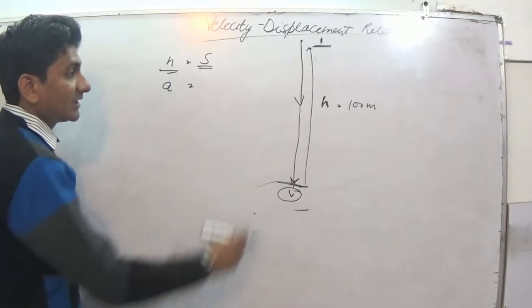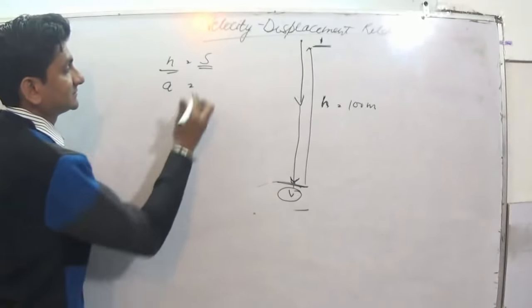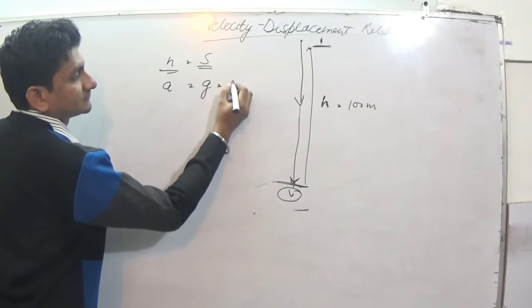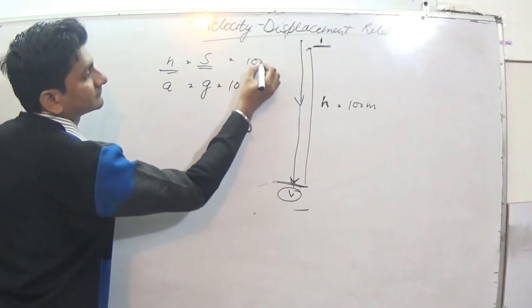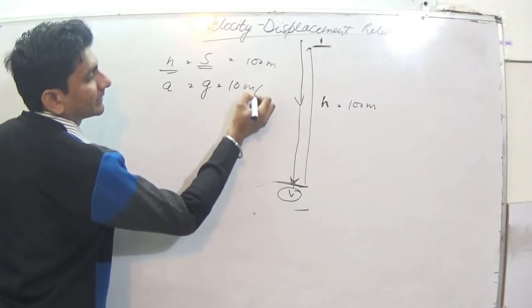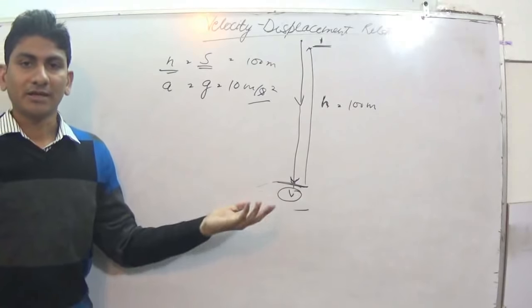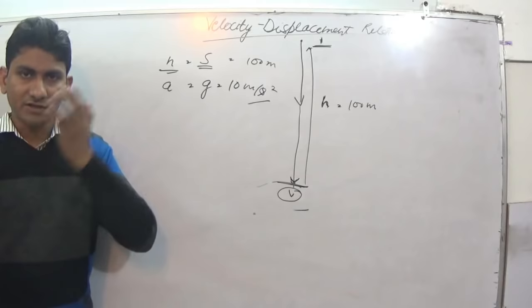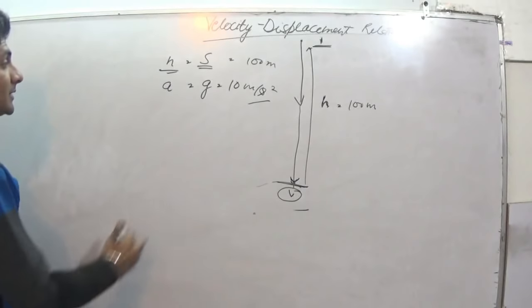a is what here? Acceleration due to gravity, approximate 10 meter per second square. To be accurate, 9.8 meter per second, so we will cover it in consecutive chapters, it's not a problem.